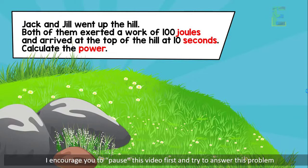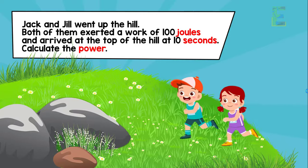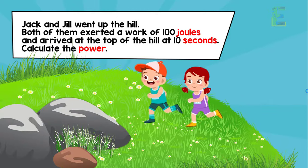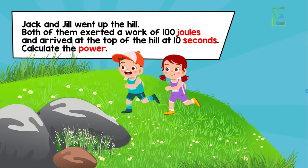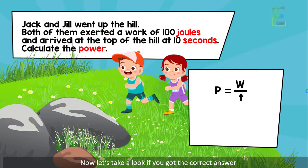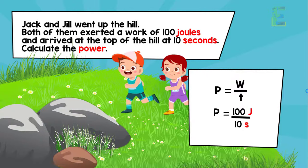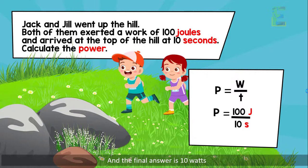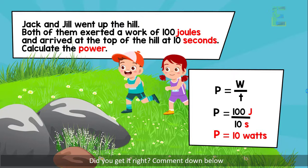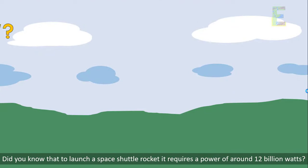Now look at this problem — I encourage you to pause this video first and try to answer it. Jack and Jill went up the hill. Both of them exerted a work of 100 joules and arrived at the top of the hill in 10 seconds. Calculate the power. Work and time are given, so we can calculate the power. The final answer is 10 watts. Did you get it right? Comment down below!